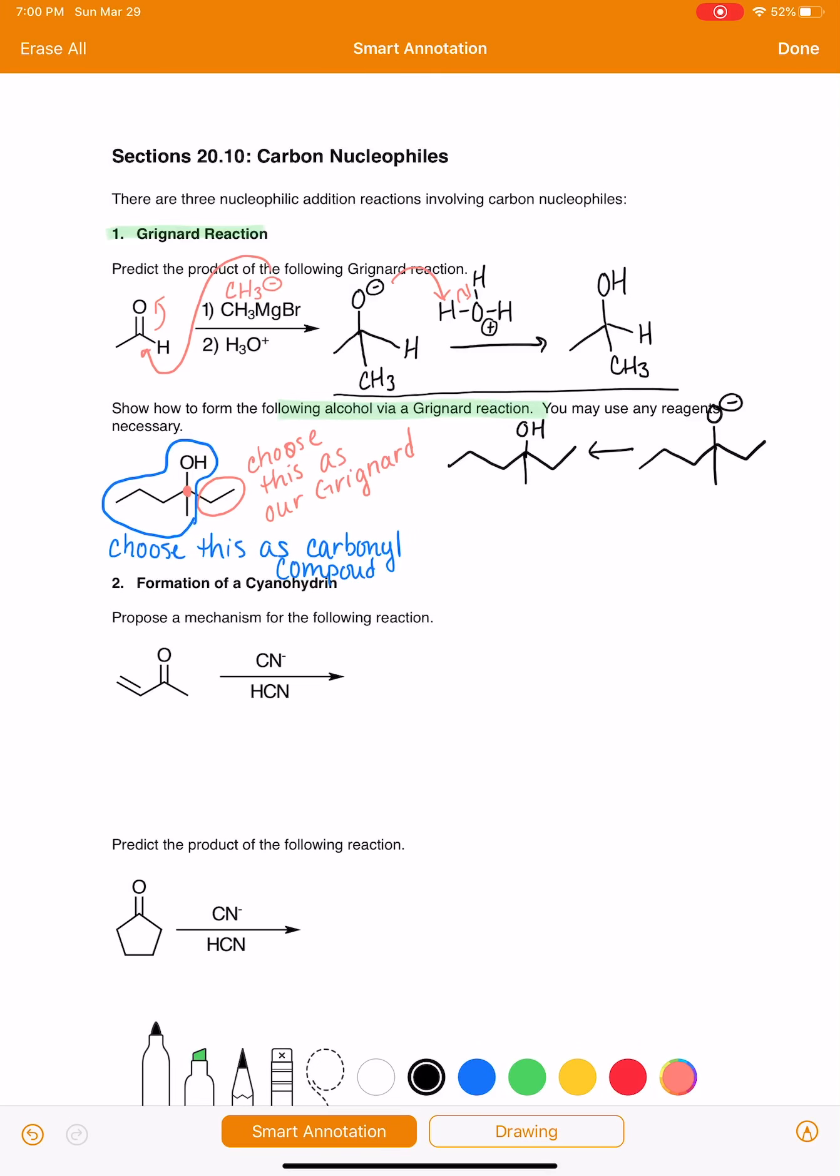And we're using H3O plus to protonate it. And so then let's think back even prior to that, before we form this O minus, this alkoxide, we had a carbon oxygen double bond and the carbon oxygen double bond was right here. So let's go ahead and start sketching that in. We had a carbon oxygen double bond and we decided that the ethyl group was, this was going to be our Grignard.